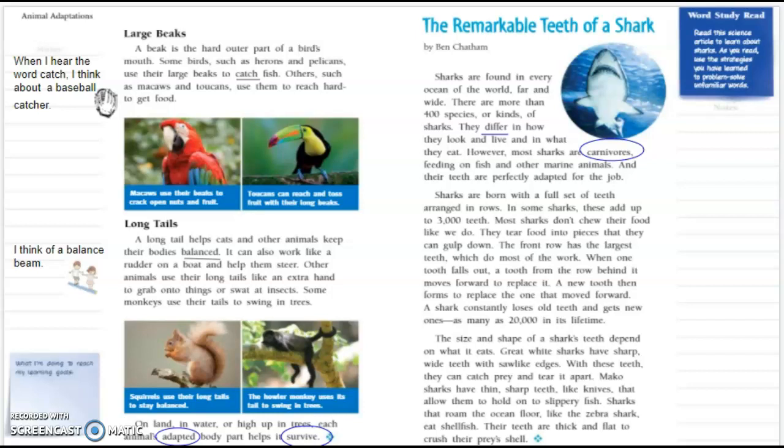Long tails: A long tail helps cats and other animals keep their bodies balanced. It can also work like a rudder on a boat and help them steer. Other animals use their long tails like an extra hand to grab onto things or swat at an insect. Some monkeys use their tails to swing in trees. On land, in water, or high up in trees, each animal's adapted body parts help it survive.